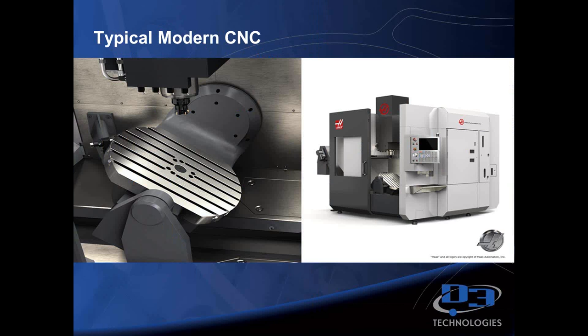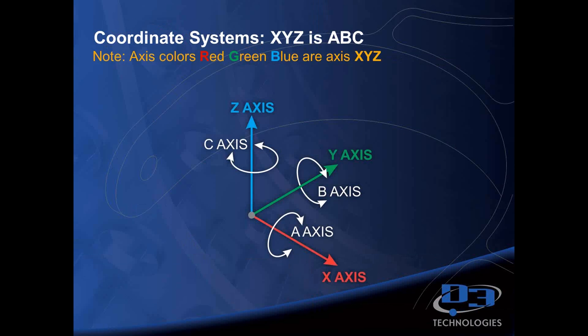Here's a typical modern CNC machine. This one is a five-axis Haas mill. I'll break down the axes for this machine in our next couple of slides. With the software, we're going to have a model work-coordinate system, and we're going to have another work-coordinate system for our programming.